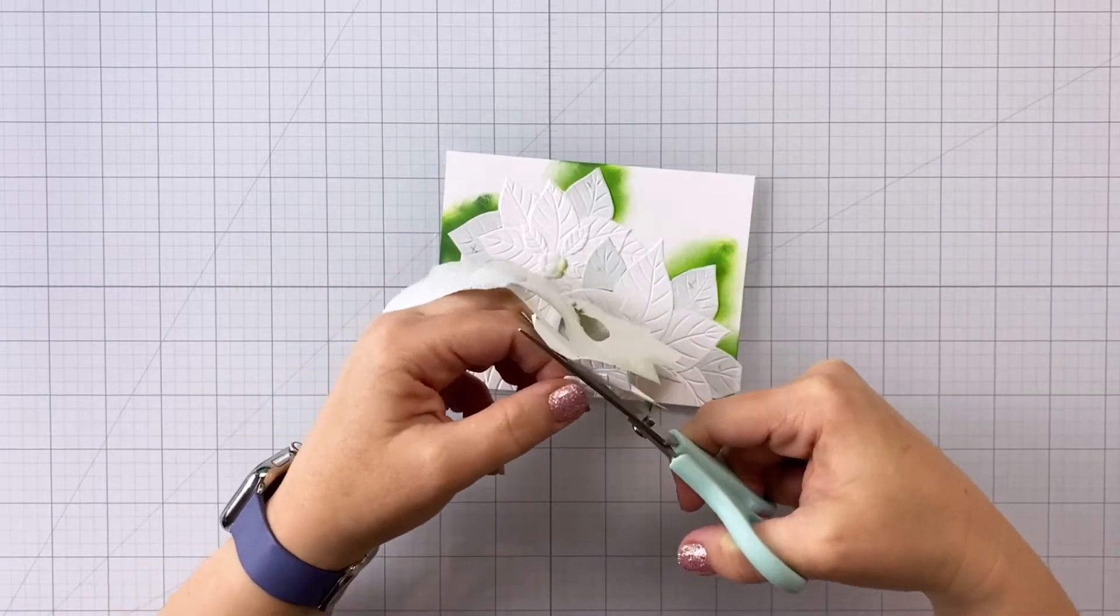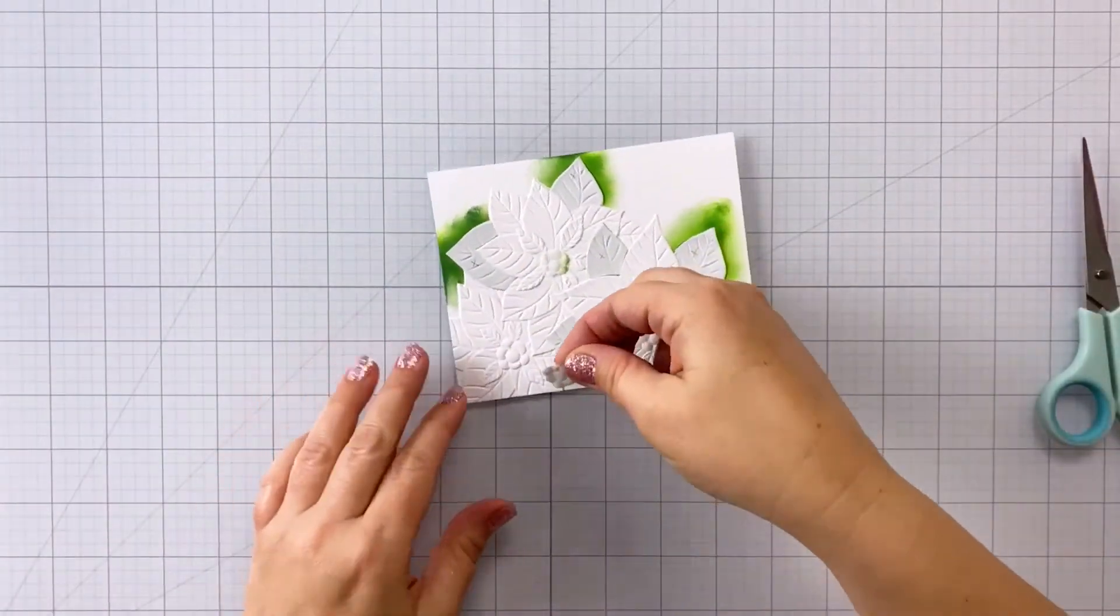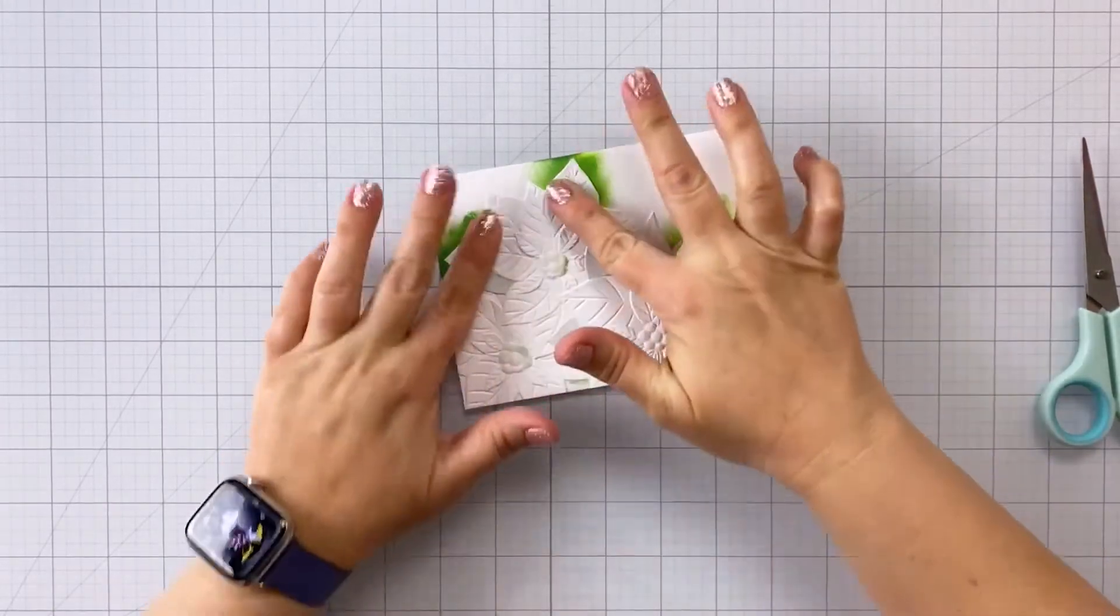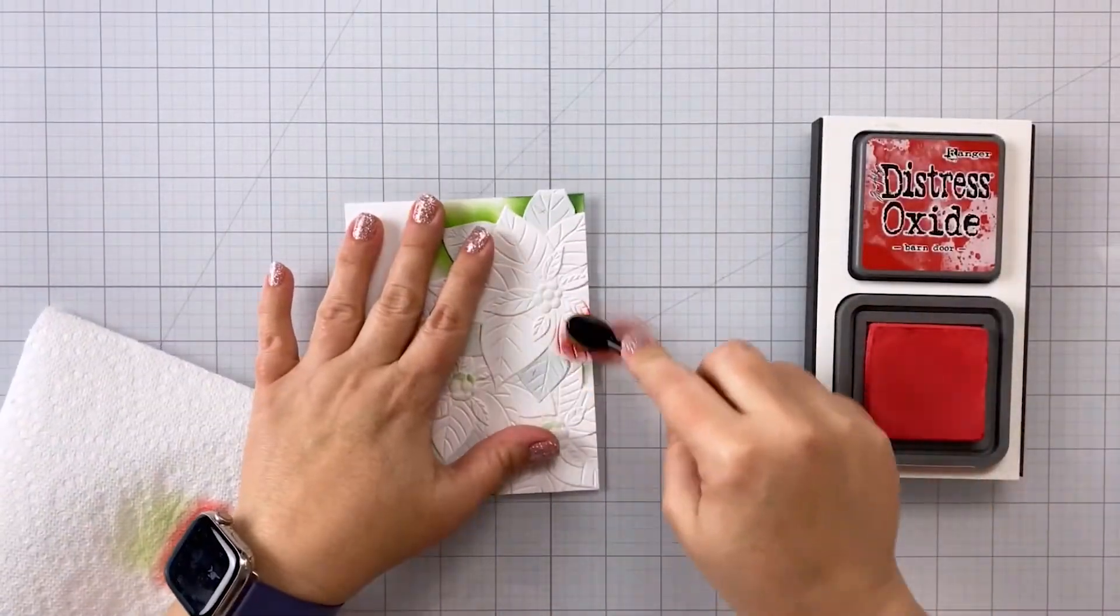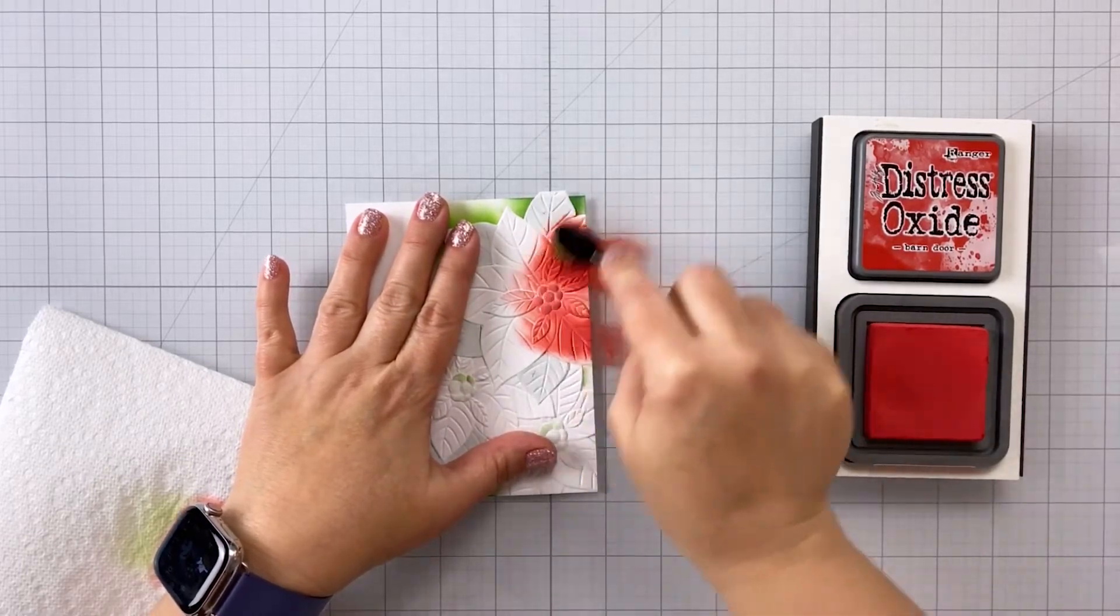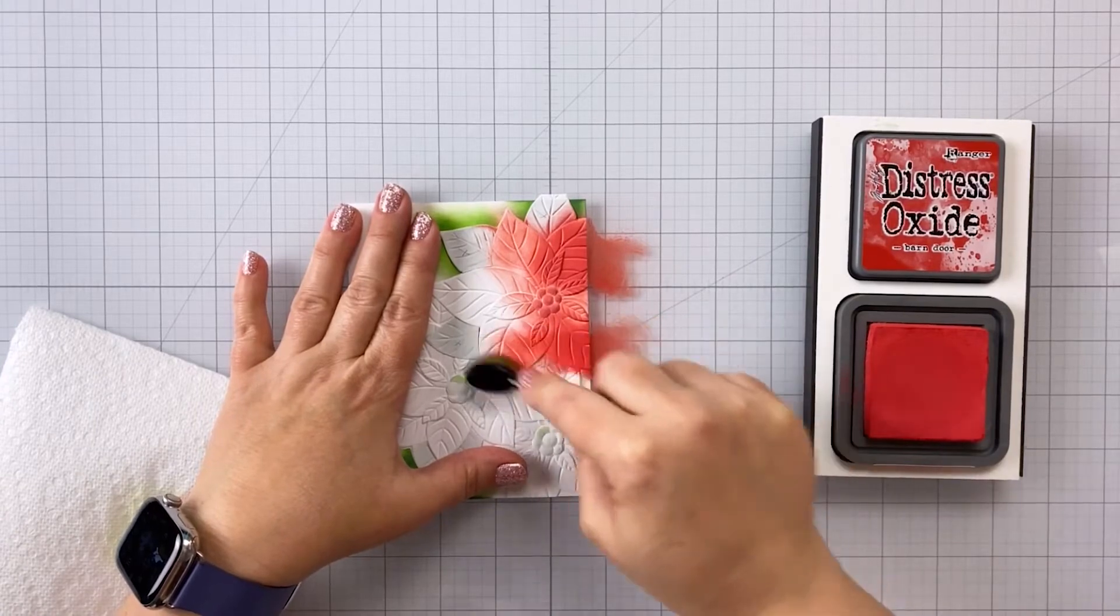I'm going to be using some more distress oxides. So for the main color, I'm going to be using barn door, which is a really nice red. It's kind of a true red, I guess is what I would classify it as. And now I can just kind of go a little more bold and just get that color on there, cover all of those flowers.